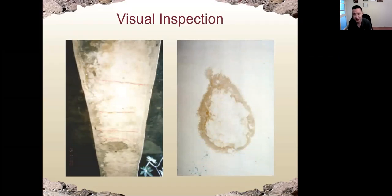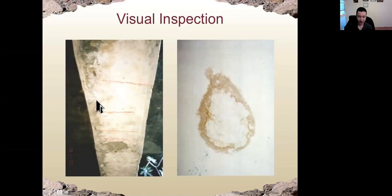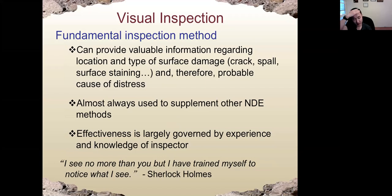The simplest NDT method is visual inspection — we look at the members using our naked eye. We should always use visual inspection before any type of NDT method. We can see where the cracks or spots are, and based on that, we will know the possible reasons for different types of stresses. Visual inspection can provide valuable information regarding the locations and types of surface damage, though it is limited to the surface of the member.